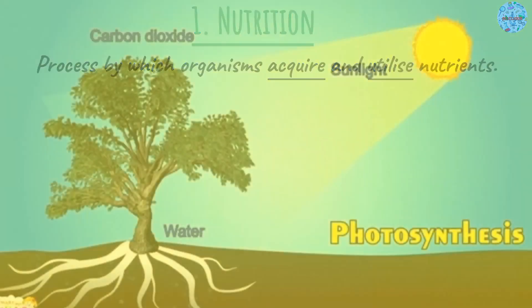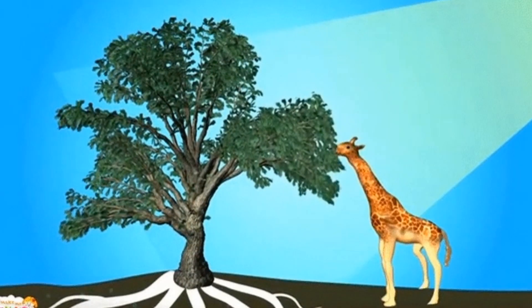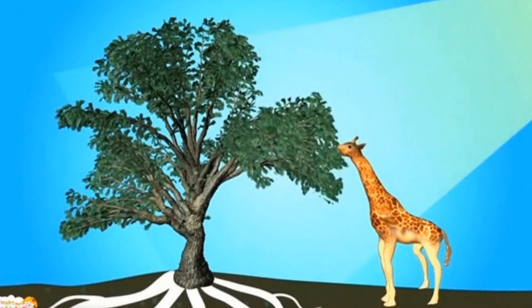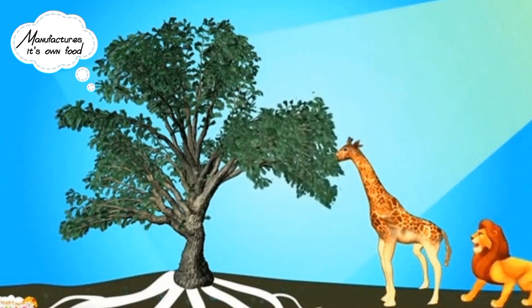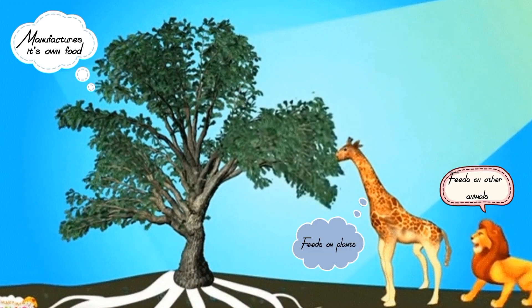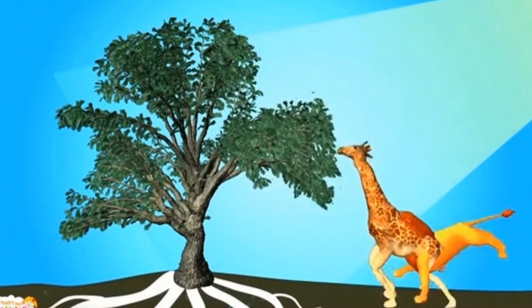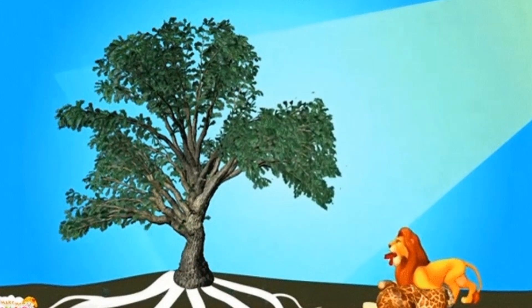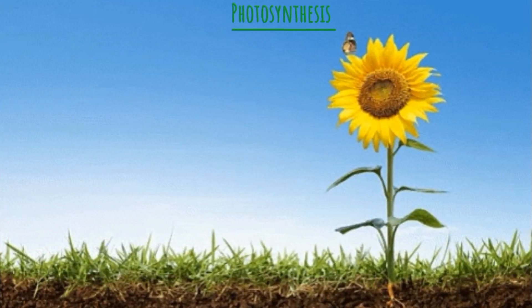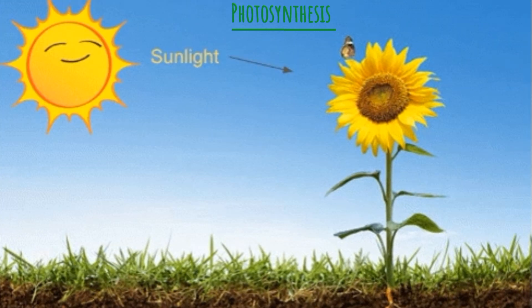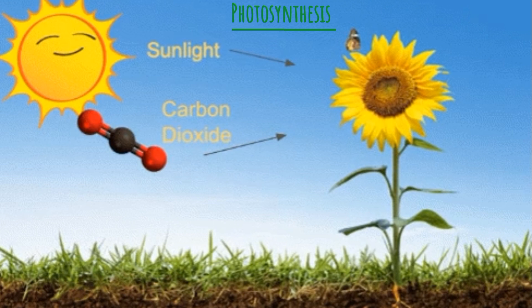Now, when it comes to living organisms, they are so diverse and so different from one another. So we cannot expect that all living organisms will have a similar mode of nutrition. For example, in the case of plants, plants have the ability to manufacture their own food through a process called photosynthesis, and therefore they are referred to as autotrophic.